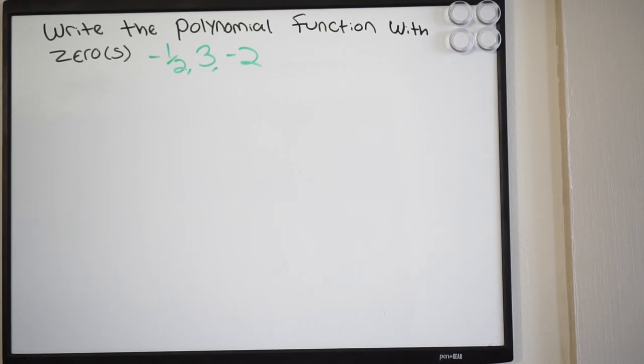Alright guys, today we're going to talk about how we can write the polynomial function with the zeros negative a half, three, and negative two.